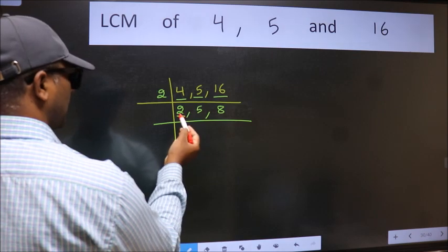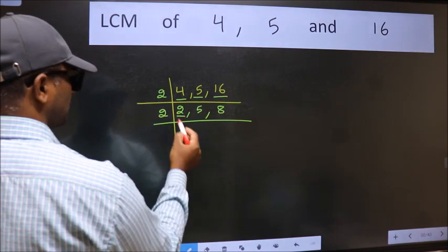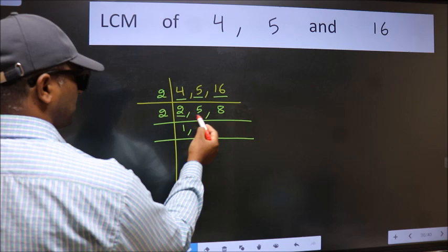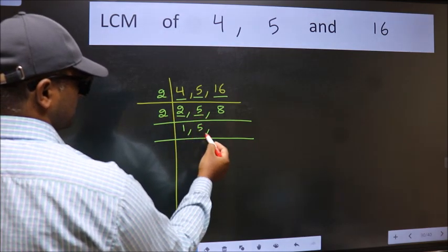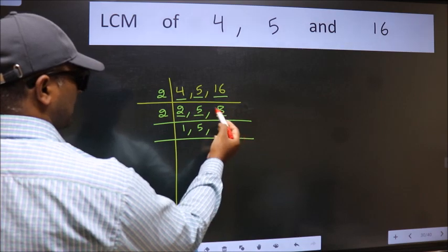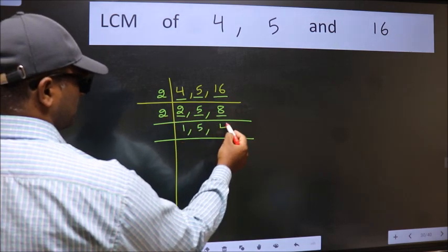Now here we have 2. 2 is a prime number so 2 times 1 is 2. The other number 5 is not divisible by 2 so we write it down as it is. The other number 8, when do we get 8 in the 2 table? 2 times 4 is 8.